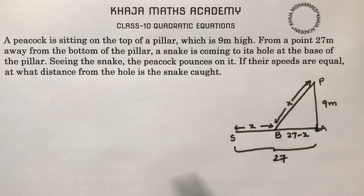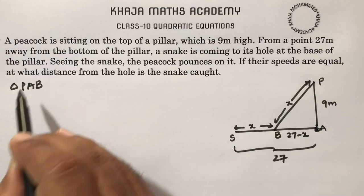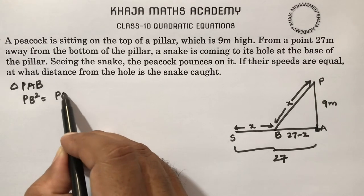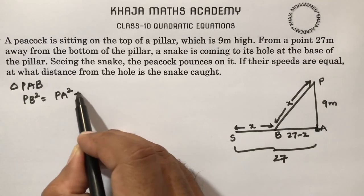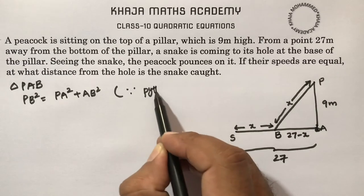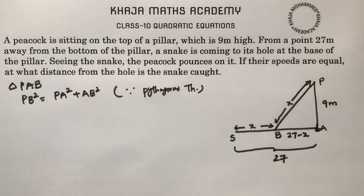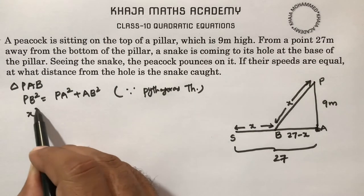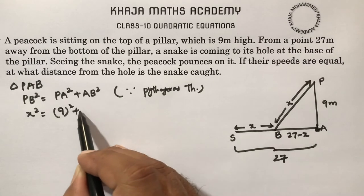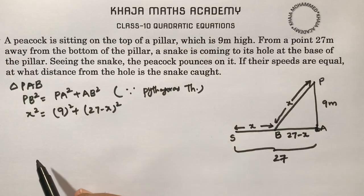We apply the Pythagorean theorem for triangle PAB: PB squared (hypotenuse squared) equals the sum of squares of the other two sides, PA squared plus AB squared. Substituting values: PB is x, PA is 9, and AB is (27 minus x).